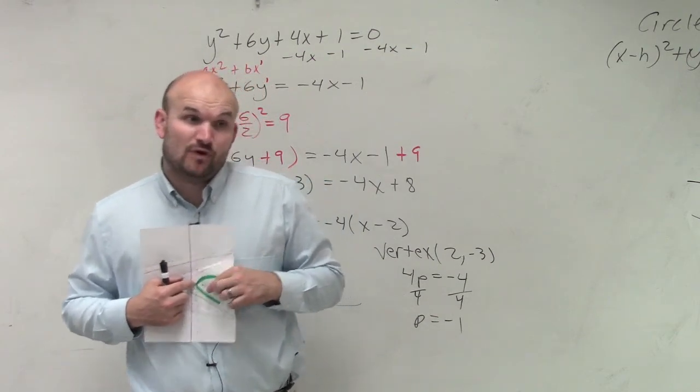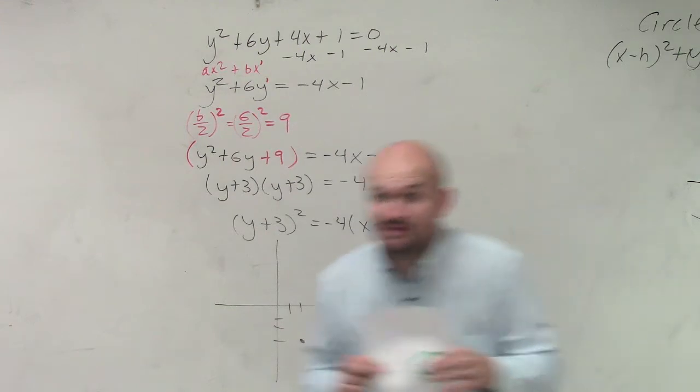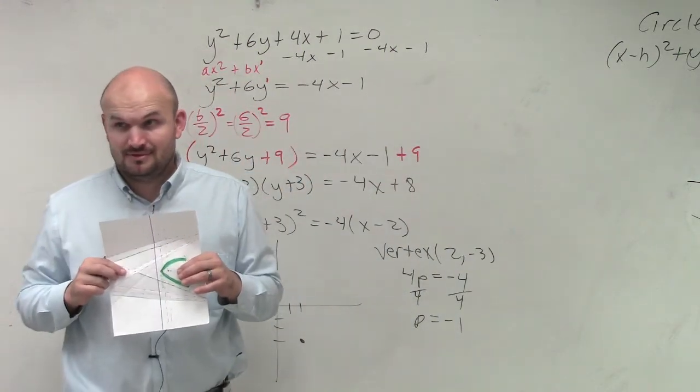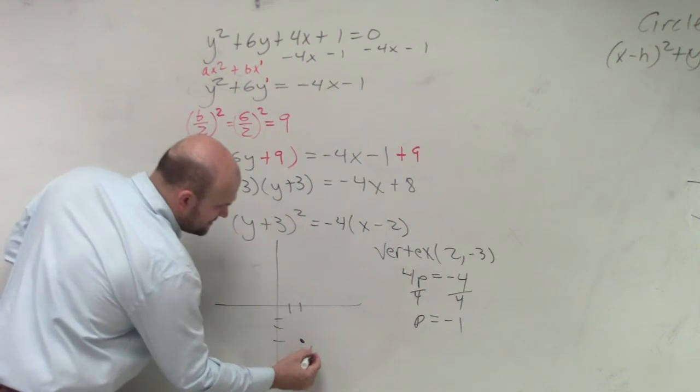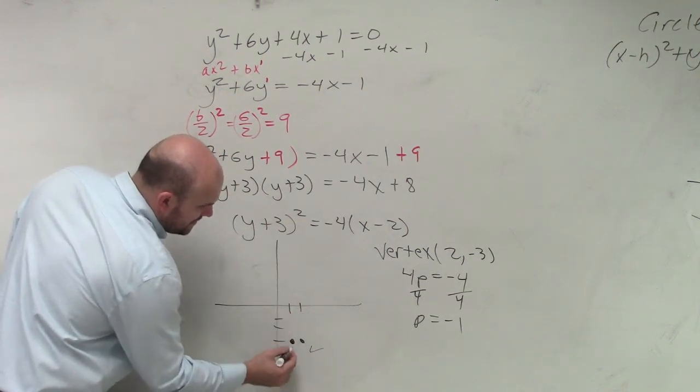So should negative 1, should I go to the right, negative 1? Or should negative 1 represent going to the left? It's the left one, right? So if here's my vertex, that means my focus is right there.